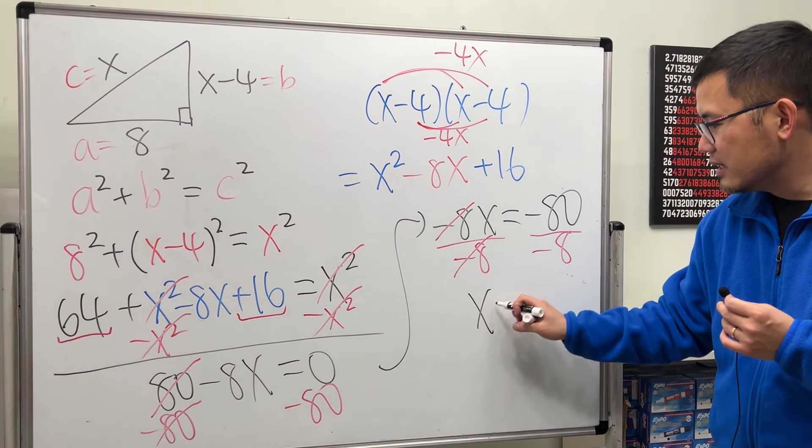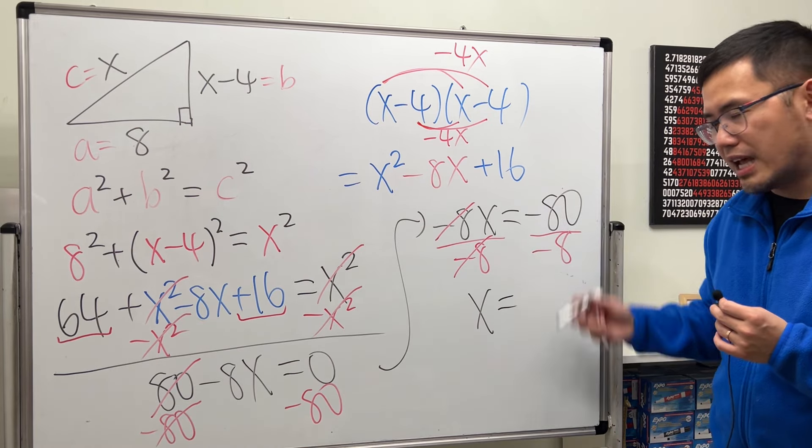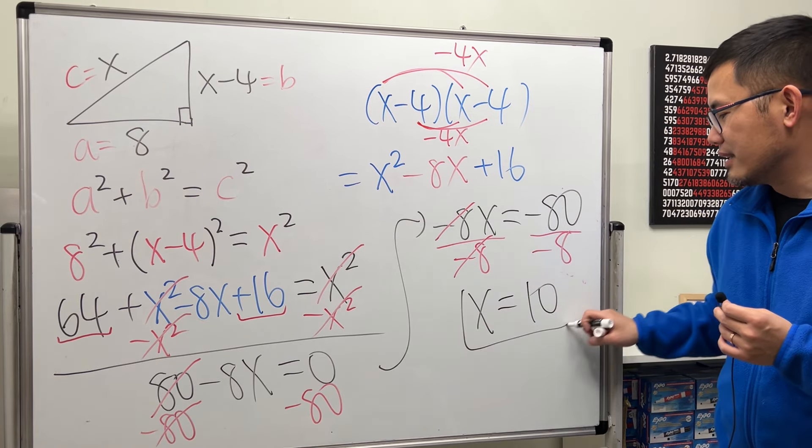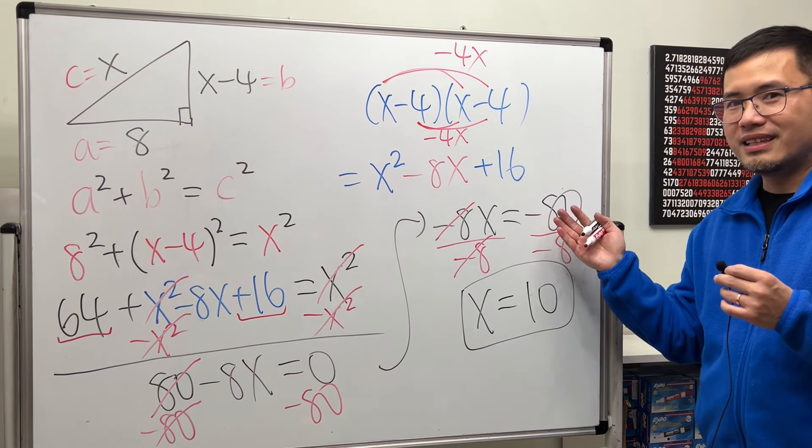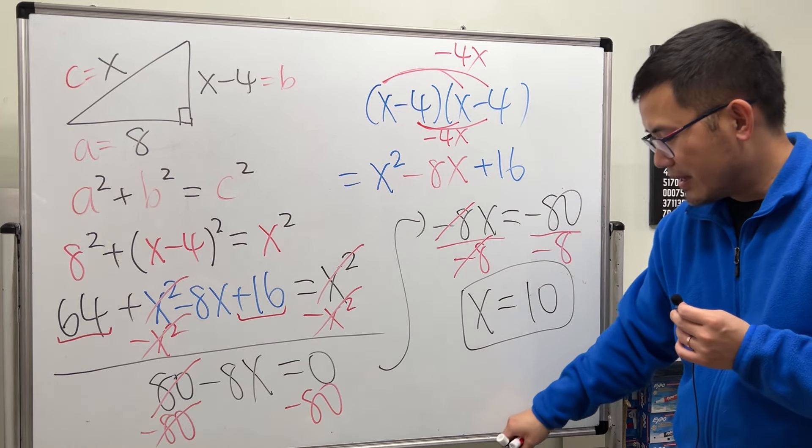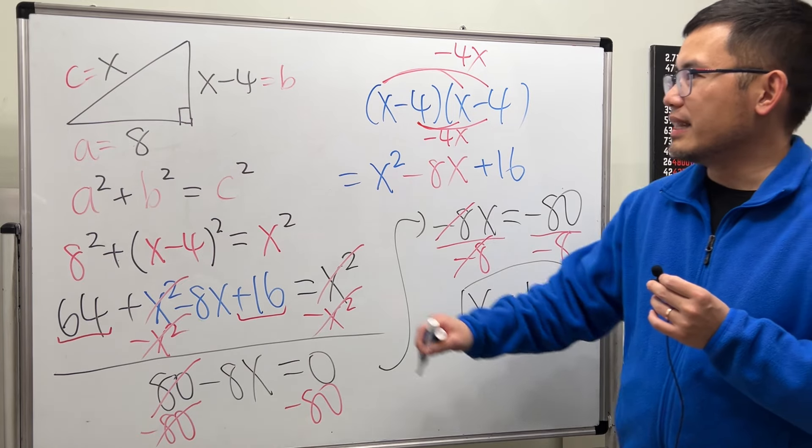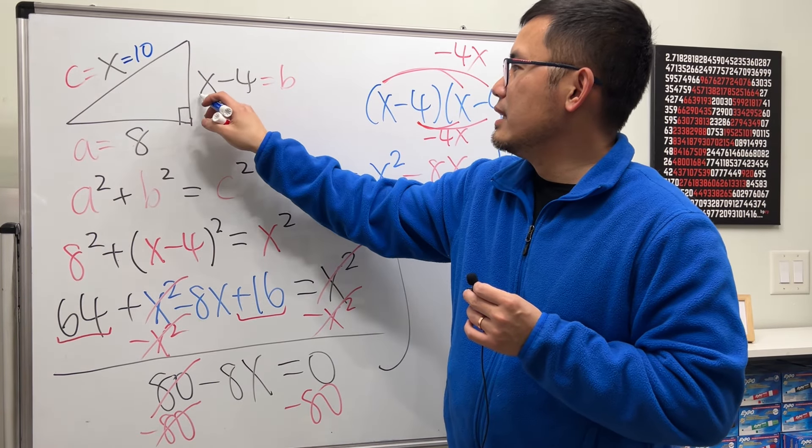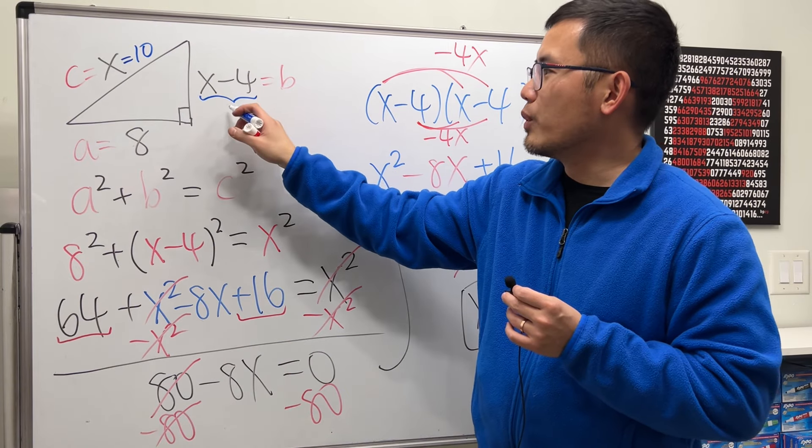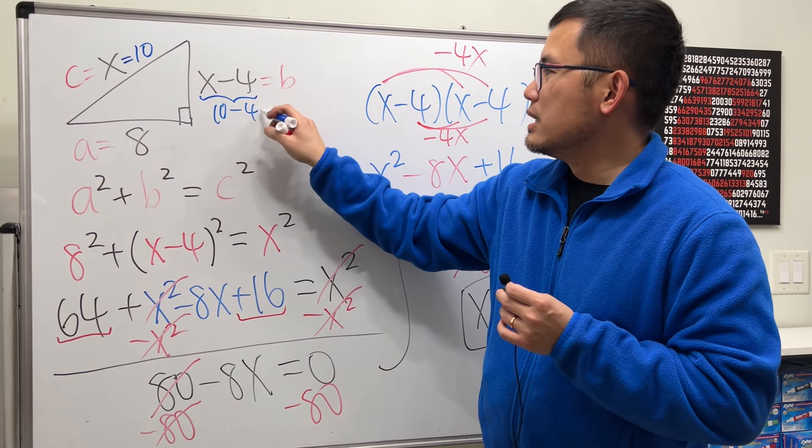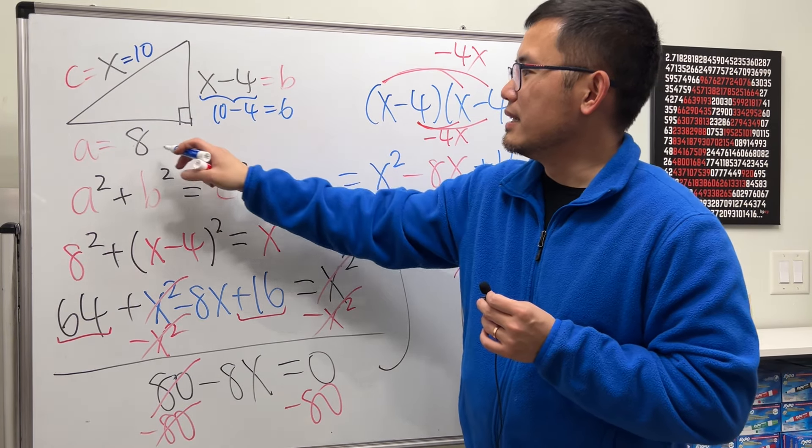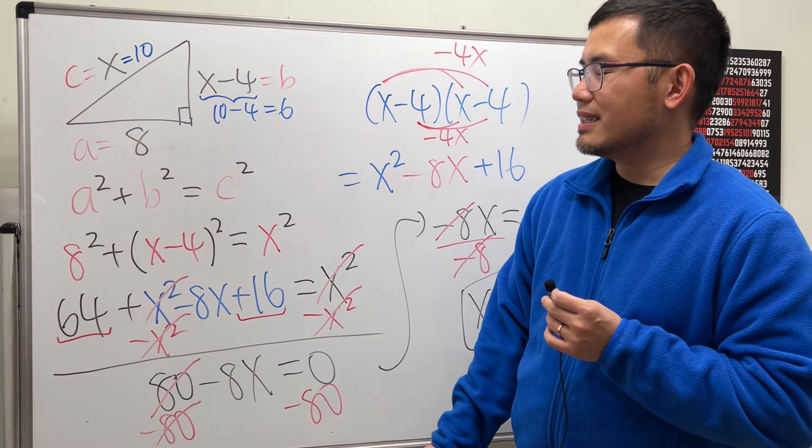So finally, x is equal to 10. Yes. x is equal to 10. Negative 80 divided by negative 8 is 10. So let me just show you though. When x is equal to 10, this right here is 10. And then this right here is 10 minus 4, which is 6. And then this is equal to 8.